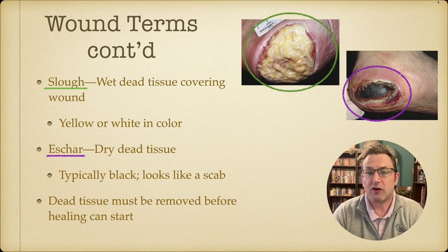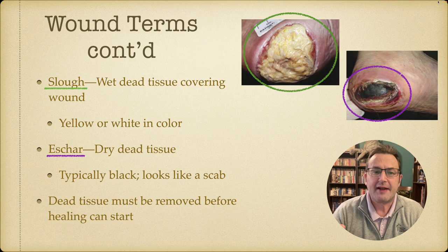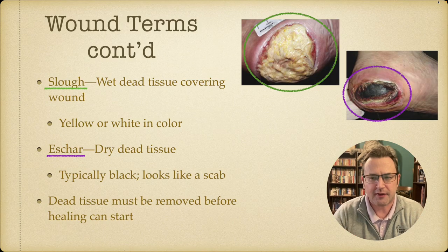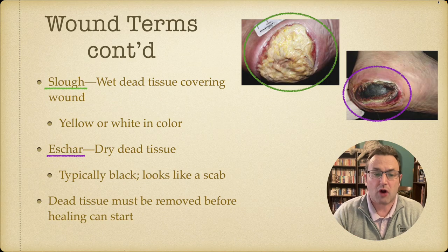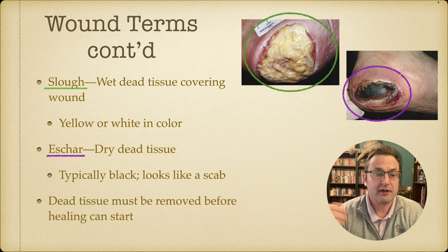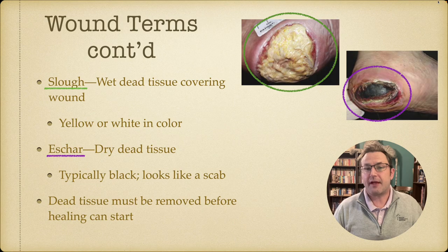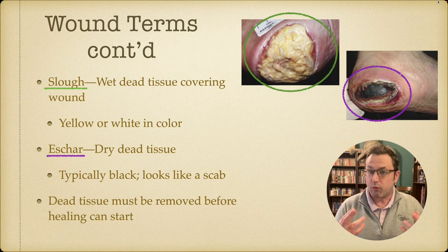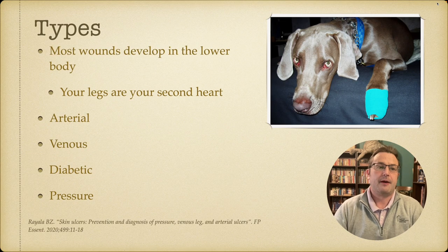Slough and eschar are terms you'll be discussing. Slough is wet dead tissue covering the wound — it's usually white or yellow in color. Eschar is dry dead tissue; it's typically black, gray, or ashy colored and looks like a scab. In order to heal a wound, the first step is that dead tissue has to be removed before new tissue can form in its place. So: step one, we have slough or eschar and we get rid of it; step two, we hopefully begin seeing granulation.